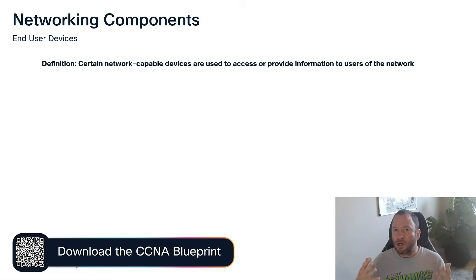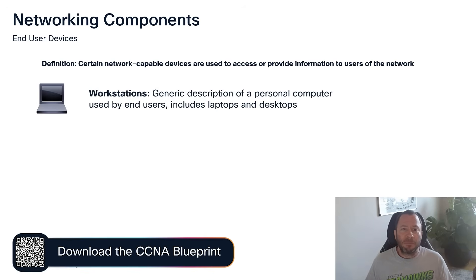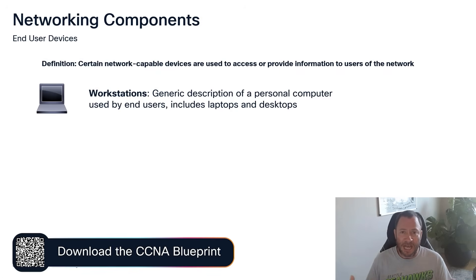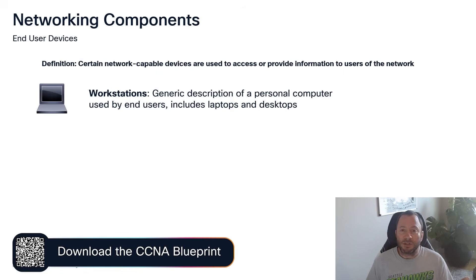The first thing is what we call end devices or endpoints. This is essentially a device that is accessing the network and requesting resources. We have what are generically called workstations — it can be a laptop or a desktop computer — basically some device we're using to access resources. For example, if you want to print a document, you hit print, it gets sent over the network to the printer, and the workstation is the device that starts that process.